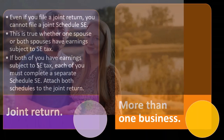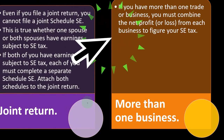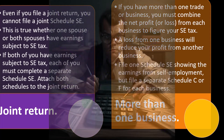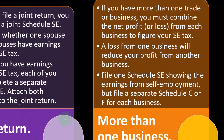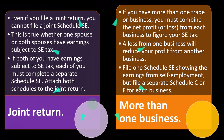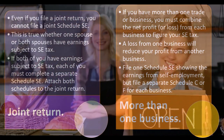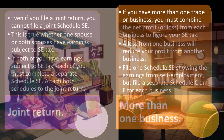If you have more than one trade or business, you must combine the net profit from each business to figure your SE tax. A loss from one business will reduce your profit from another. File one Schedule SE showing the combined earnings from self-employment, but file a separate Schedule C or F for each business. For example, if one person owns two businesses, there may be two separate Schedule Cs, but one Schedule SE combining the income from both for that individual's Social Security number.